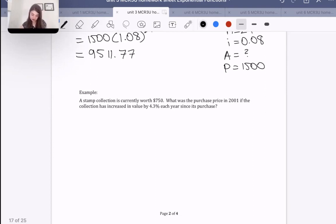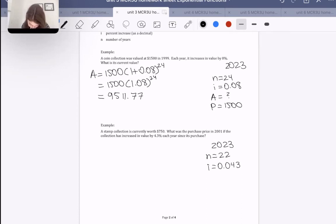The next one says a stamp collection is currently worth $750. What is the purchase price in 2001 if the collection has increased in value by 4.3% each year since its purchase? So again, I'm going to assume that it is 2023. Therefore the number of years would be 22 years since 2001. I is 4.3%, so 0.043 if we put that in decimal form. It is currently worth $750. And what was the question? The question is what the purchase price was. So they want to know the initial price, they want to know P this time. And A is 750.